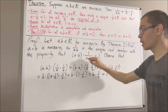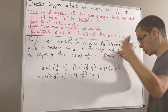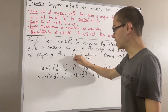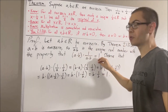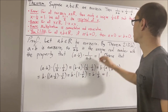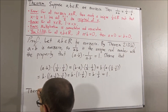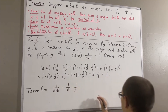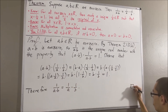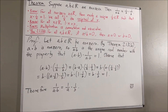Since 1 over (a times b) is the only real number such that if we multiply it by a times b we get 1, that tells us that these two must be equal. And so this completes the proof. That's pretty much it for this video.